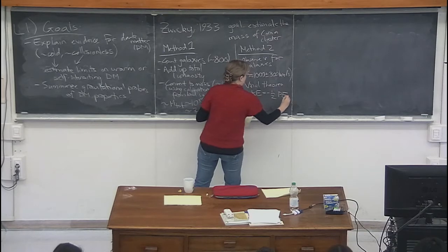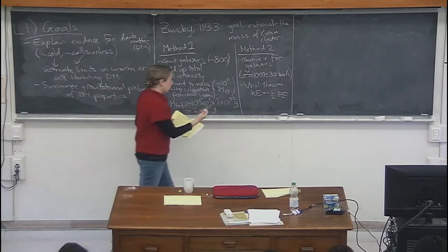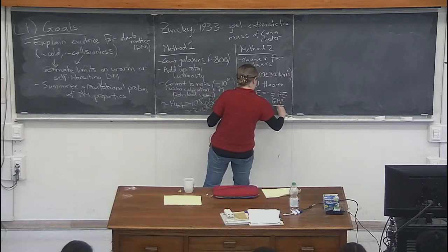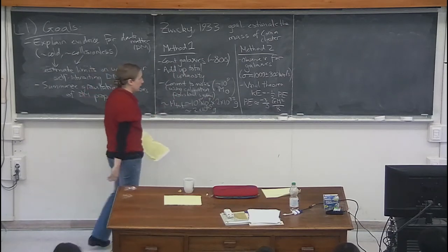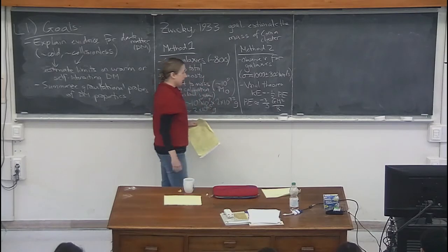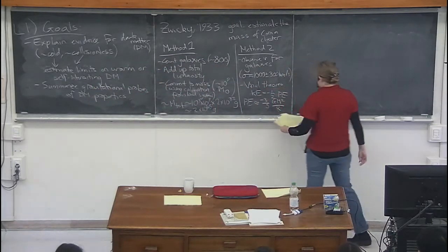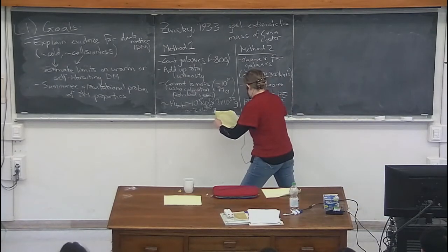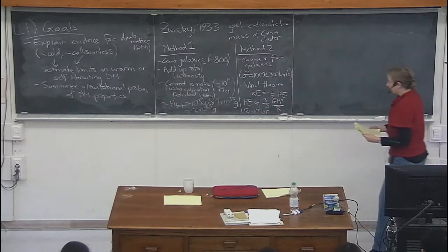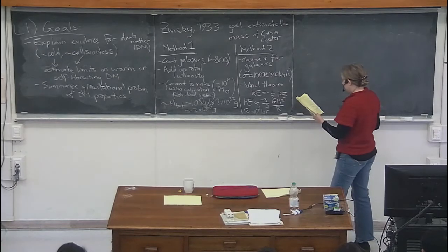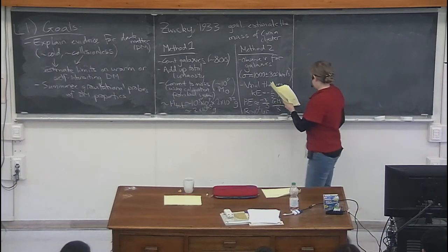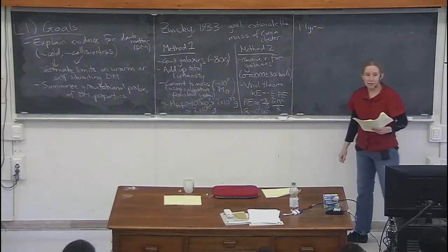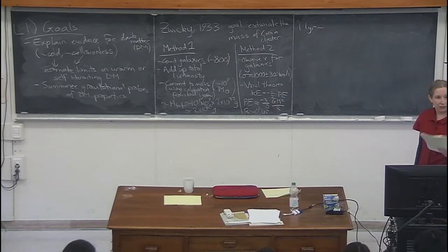The virial theorem tells you that the kinetic and potential energy are of the same order, with a factor of a half. You model the potential energy as GM squared over R times some conversion factor, where M is the total mass of the galaxy cluster — it's just this self-gravitating system. So that gives us an estimate: we need to know the approximate virial radius, which you can measure by measuring how far out the galaxies are. For this system, that comes out to be about 10 to the 6 light years. One light year is about 10 to the 16 meters using the speed of light of 3 times 10 to the 8 meters per second and pi times 10 to the 7 seconds per year.